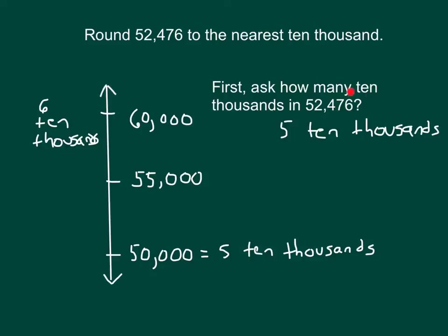And then the last thing that we will do is that we will place the number 52,476 onto our number line. Finally, we can decide whether it's closer to 50,000 or if it's closer to 60,000. In this case, 52,476 rounds to 50,000 when we are rounding to the nearest 10,000's place.